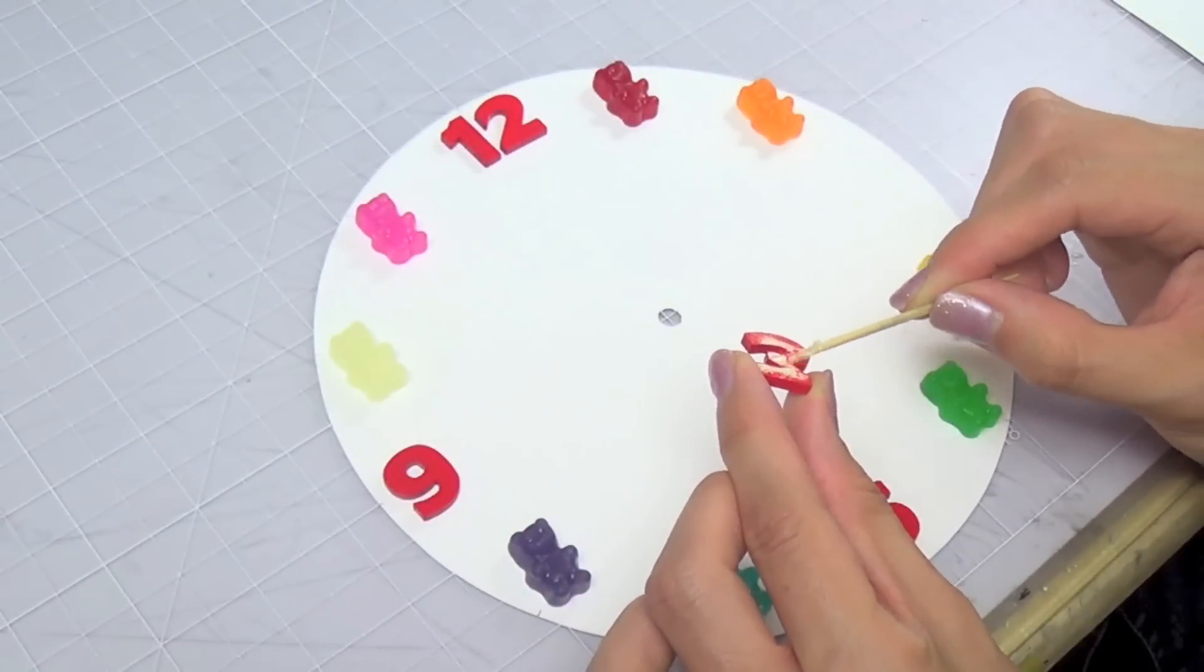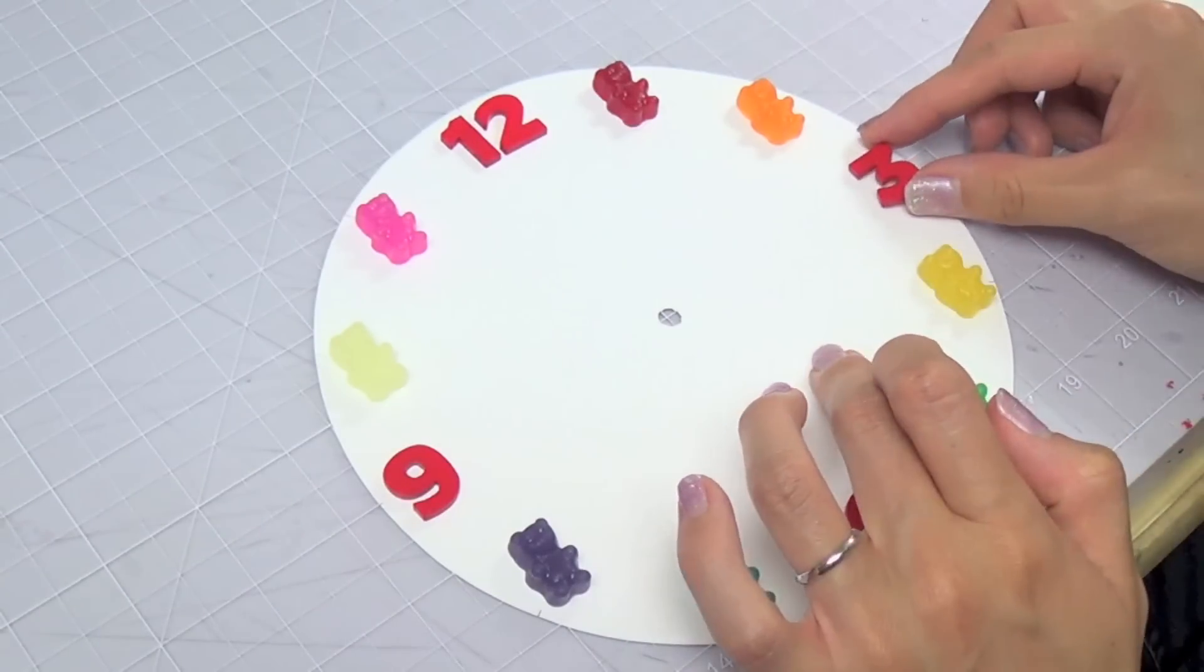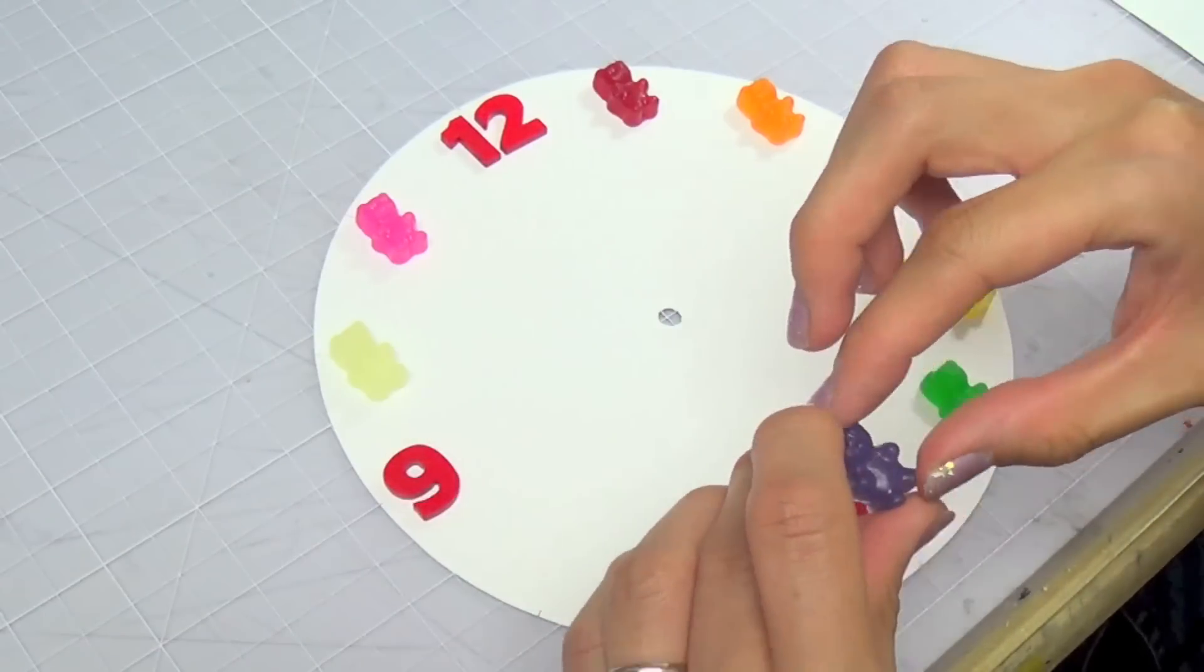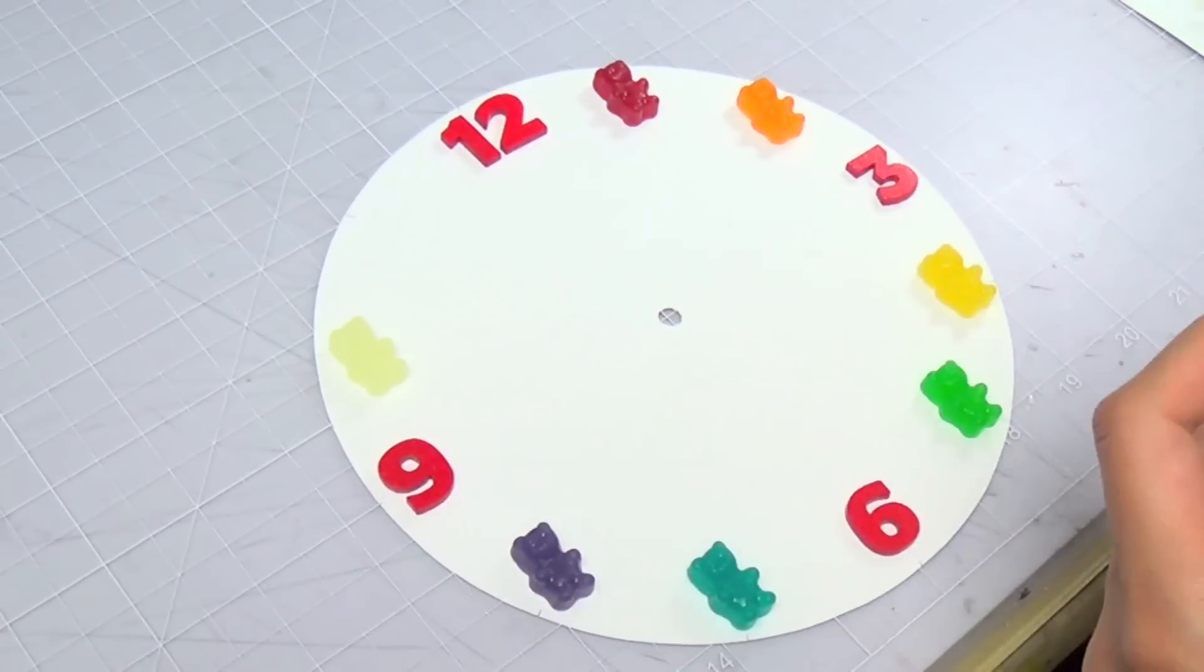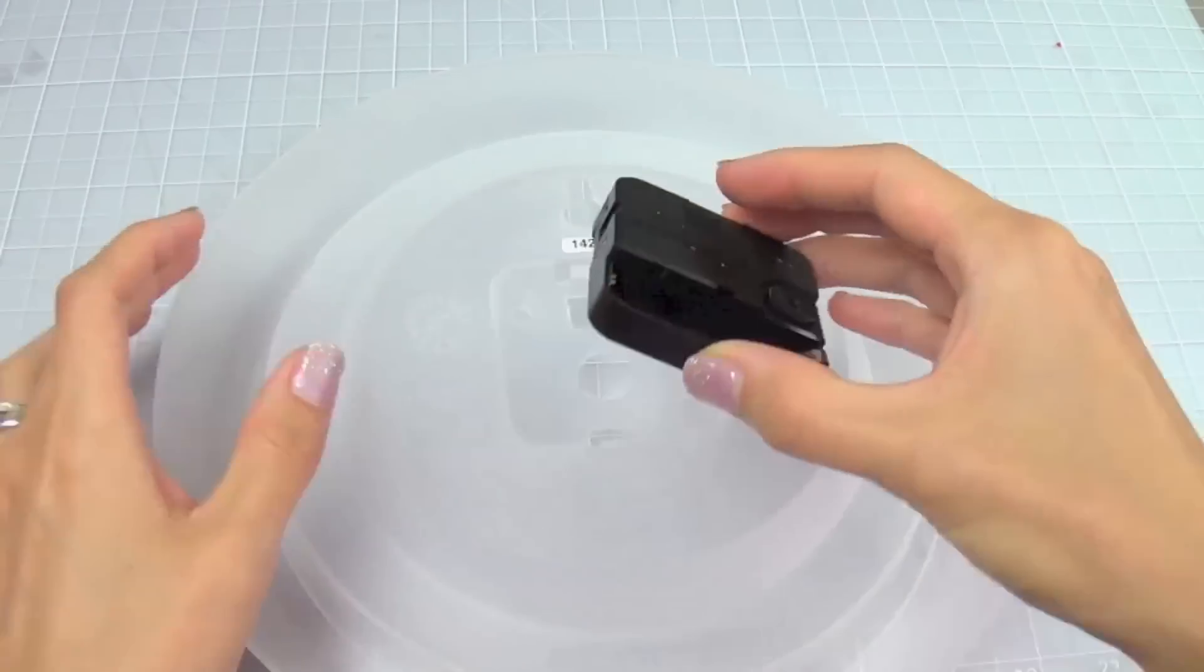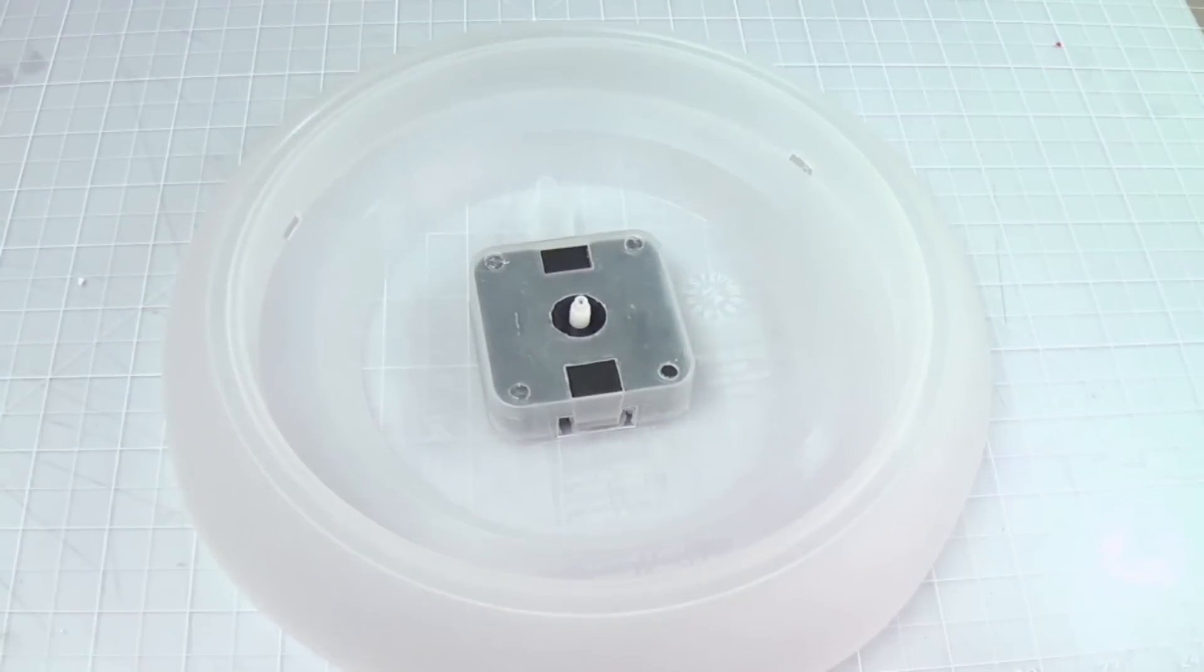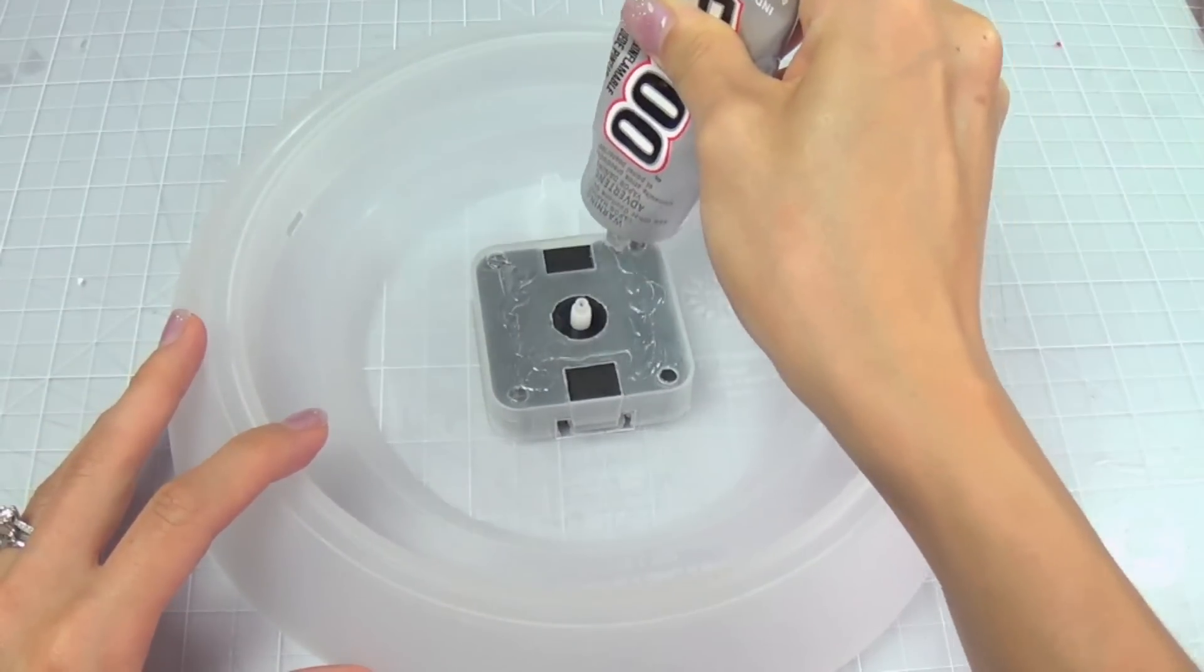Now glue on the parts on the clock face using high strength glue such as E6000. Here is the foundation. Again, using E6000.